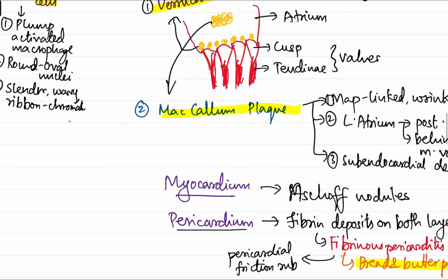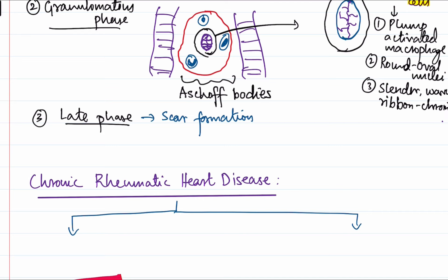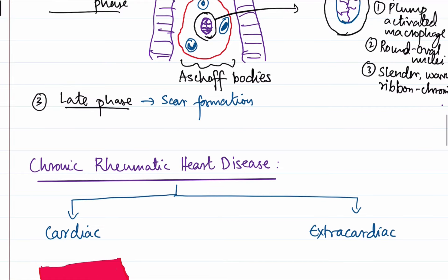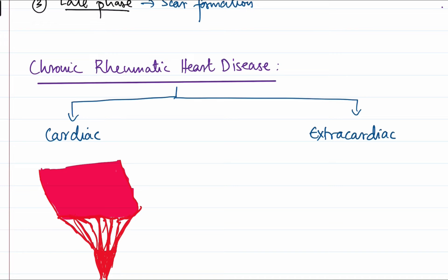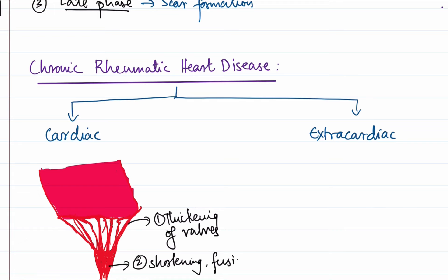Now let's move on to chronic rheumatic heart disease. As rheumatic fever is a multi-system disorder, chronic RHD includes both cardiac and extra-cardiac manifestations. It develops when the acute inflammatory reaction heals with scar formation and when there are recurrent episodes. The changes in the valves include: firstly, thickening of the heart valves, and secondly, shortening and fusion of the chordae tendineae.